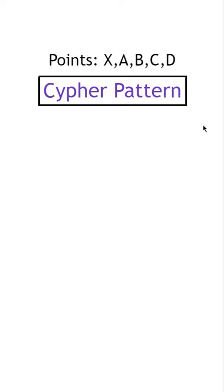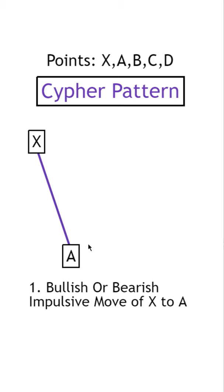In this one, we're drawing the cipher pattern, which is pretty common. Let's start with a bullish or bearish impulsive move of X to A. In this example, it's bearish.